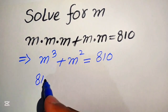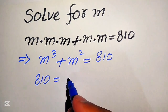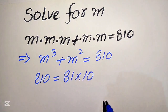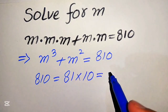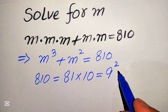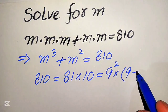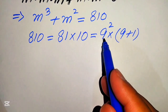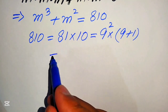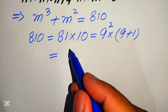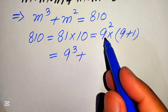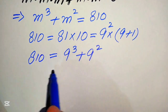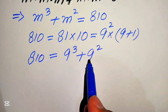We take 810 and write it as 81 multiplied by 10. We know that 81 equals 9 squared, so we write 810 as 9 squared multiplied by 10, and we write 10 as 9 plus 1. When we multiply 9 squared by both values, it becomes 9 squared times 9 equals 9 cubed, and 9 squared times 1 equals 9 squared. So 810 equals 9 cubed plus 9 squared.